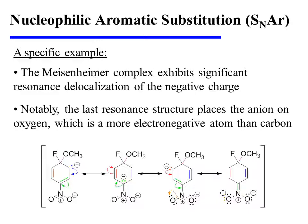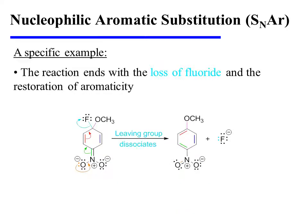As noted earlier, it is this last resonance structure which is particularly stabilizing, because it places the anion on oxygen, which is a more electronegative element than carbon. The reaction concludes with the loss of fluoride from the Meisenheimer complex. This restores aromaticity to the ring, and as a result, affords the SNAr product.